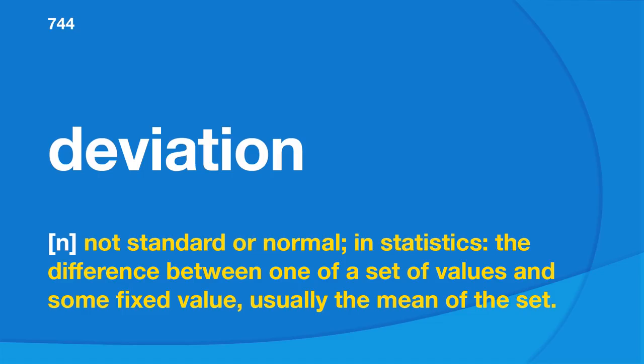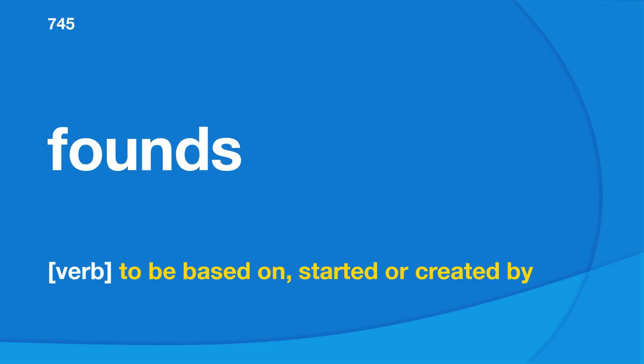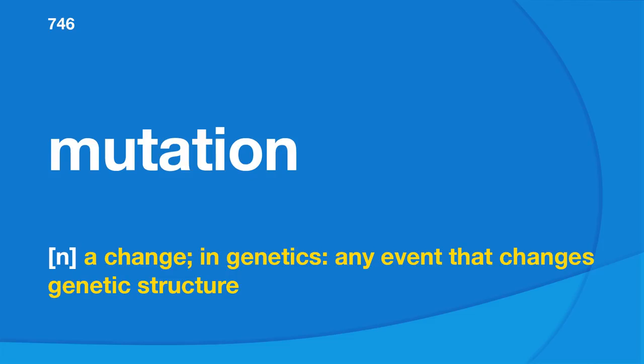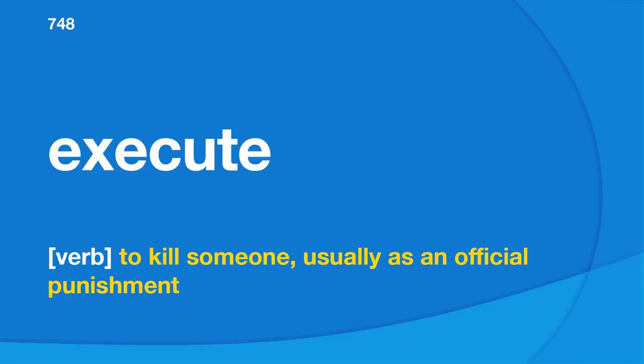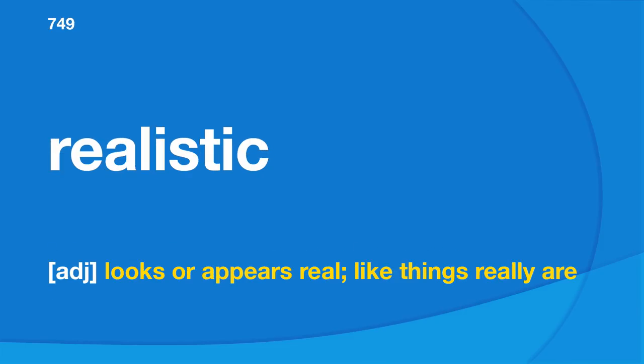Found: to be based on, started, or created by. Mutation: a change in genetics, any event that changes genetic structure. Oscillation: movement from side to side at a steady speed or frequent change in size, strength, or direction between two limits. Execute: to kill someone, usually as an official punishment. Realistic: looks or appears real, like things really are. Optimum: the best or most desirable. Equivalence: when something is equal to something else.